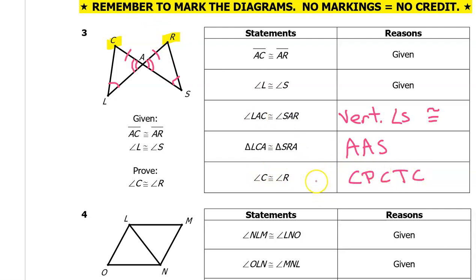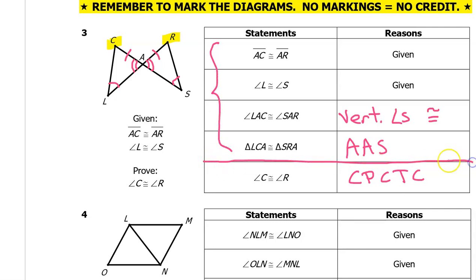In summary, when you are trying to prove that a specific pair of parts are congruent, first prove that the triangles are congruent as usual. Then just add one extra step where you name the corresponding parts and say they are congruent by CPCTC. So it's the usual proof with one extra step.